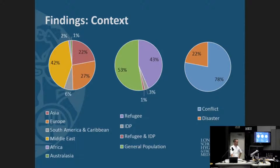Here we've broken down some of the papers by context, and there are some interesting observations. The first is really the lack of published work coming out related to the African continent, which is quite dramatic — only one paper from the chosen studies. Likewise, only two papers looked at IDP populations specifically, and just over three-quarters of the papers were focused on conflict crises.